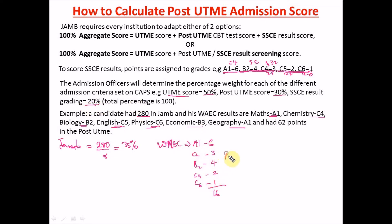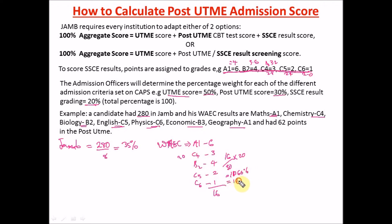To get the WAEC 20% component, we calculate: 16 ÷ 30 × 20. Why 30? Because the maximum grade per subject is 6, and 6 × 5 subjects = 30. So the maximum you can get if you score A1 in all five subjects is 30. Punching this into the calculator gives 10.67%, which we can approximate to 10.7%.